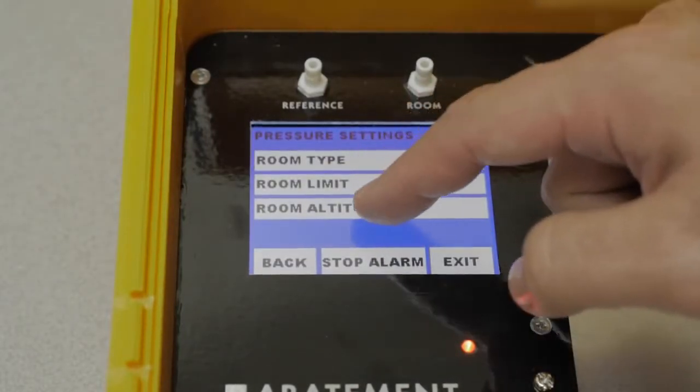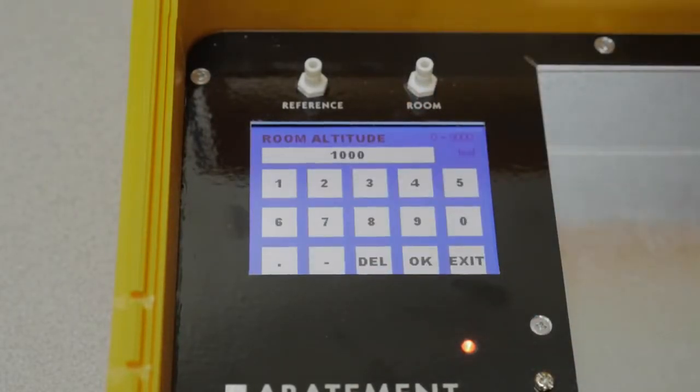Room altitude allows the altitude of the room to be set. This allows the system to compensate for the altitude and helps improve sensor accuracy.